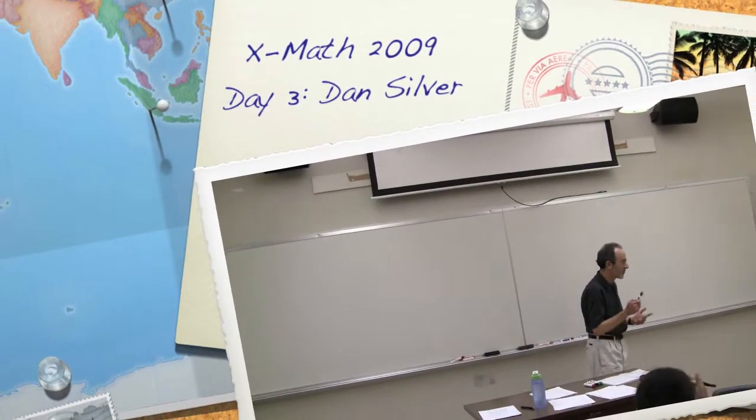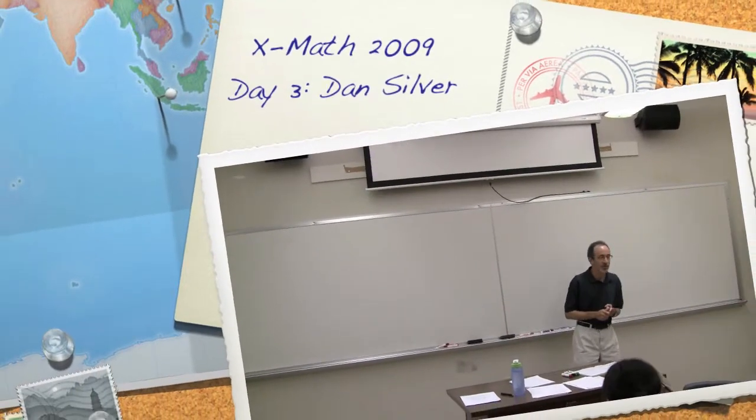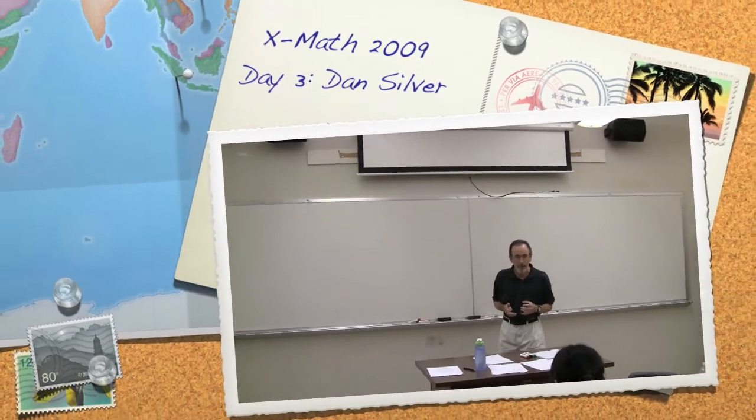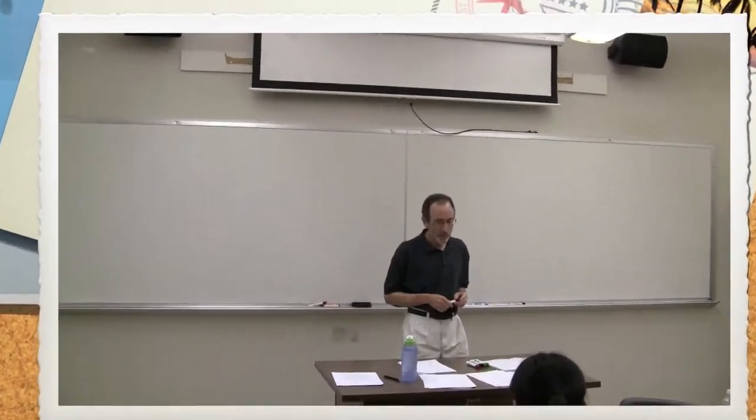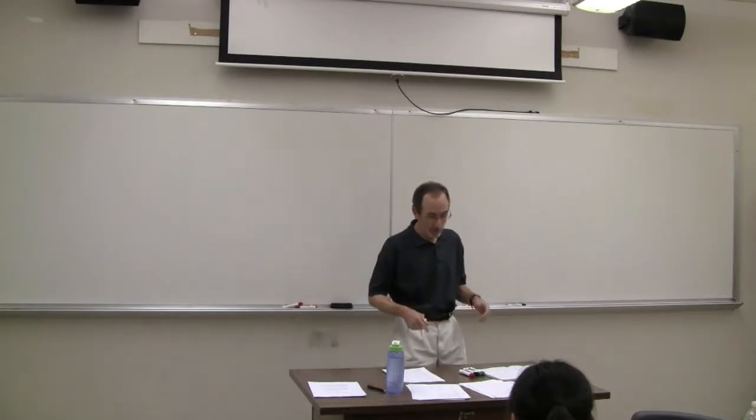We heard a talk yesterday by Susan about how to find representations of knot groups. In particular, she talked about parabolic representations, SL2C representations, and also talked about some finite image representations, especially metabelian. So let's now talk about twisted Alexander polynomials and get to what they are.